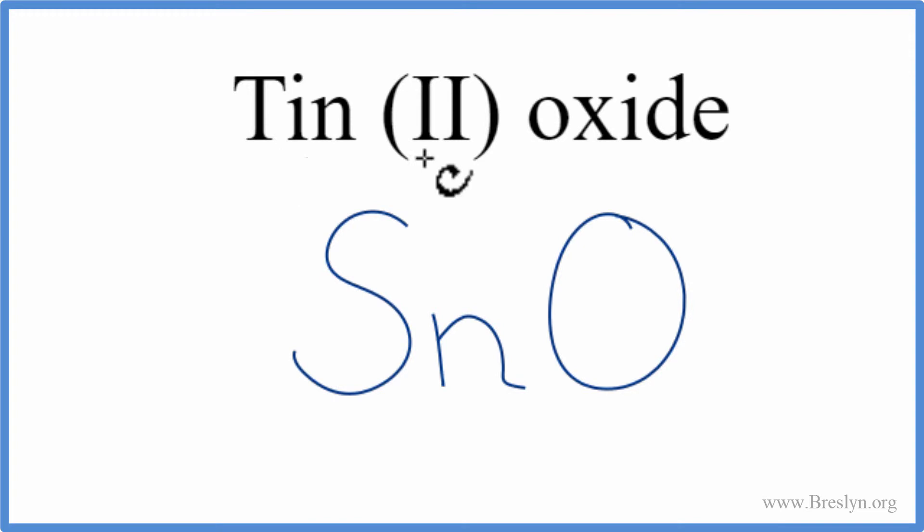The name tells us this is Tin (II), and that Roman numeral two means we have a 2+ ionic charge on the tin. Oxygen on the periodic table is 2-.